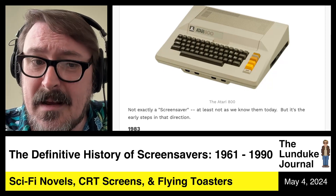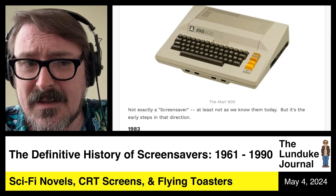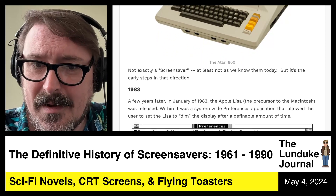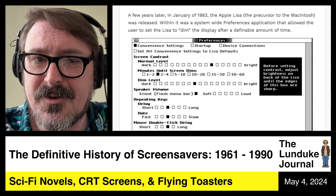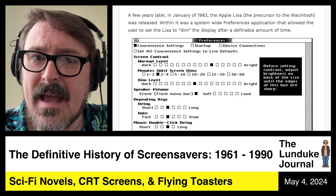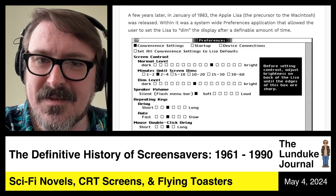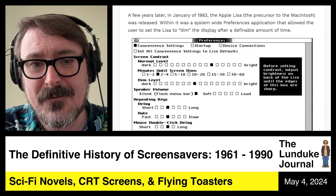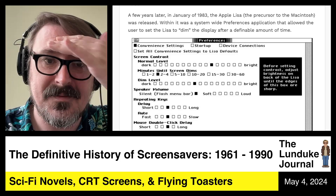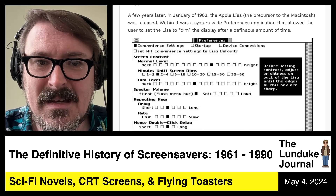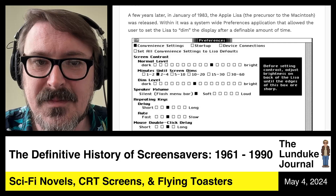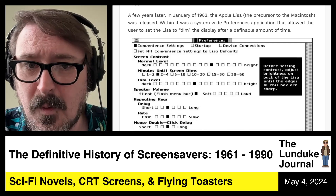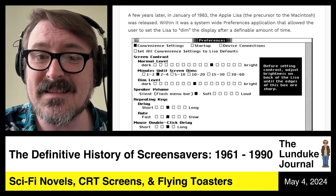Over the next couple of years, there wasn't a whole lot of motion in the screen saver world until 1983. In January 1983, the Apple Lisa — the precursor to the Macintosh — was released. Within it was a system-wide preferences application that allowed the user to set the Lisa to dim the display after a definable amount of time, with options ranging from 1-2 minutes all the way up to 30-60 minutes.